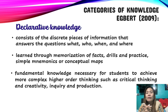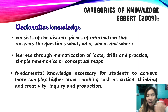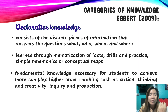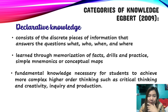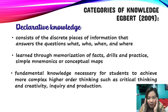Here are the categories of knowledge according to Egbert (2009). Number one is declarative knowledge — it consists of discrete pieces of information that answer the questions what, who, when, and where. These are specific facts learned through memorization of facts, drills and practice, simple mnemonics, and conceptual maps. Declarative knowledge is the fundamental knowledge necessary for a student to achieve more complex, higher-order thinking such as critical thinking and creativity. Every learner starts here, from simple to complex. We start by asking what, who, when, and where, learning specific facts that form the foundation for higher-order thinking.